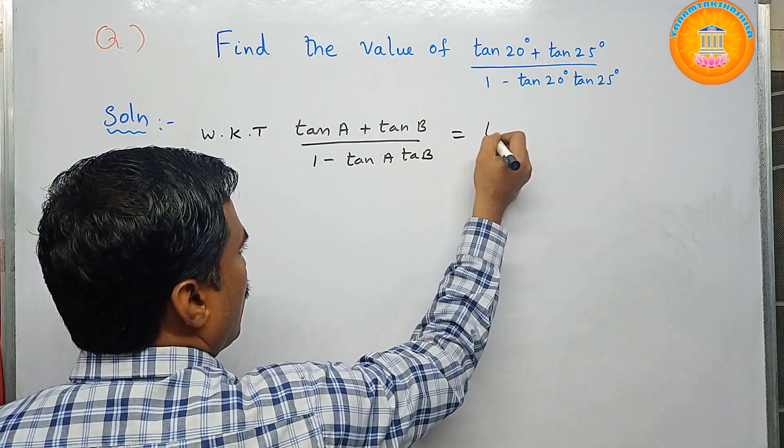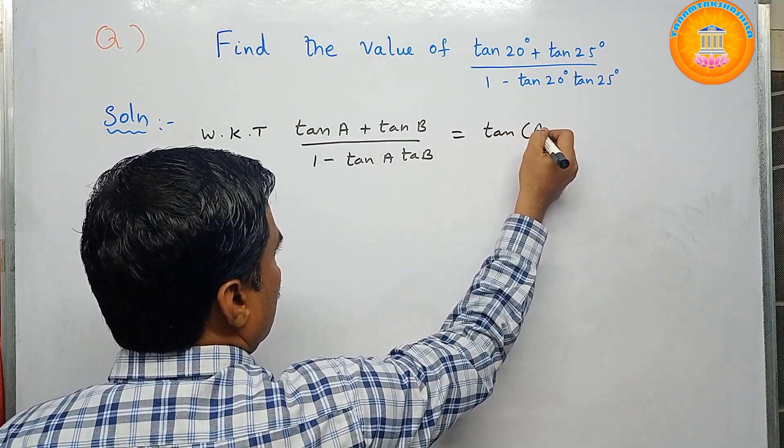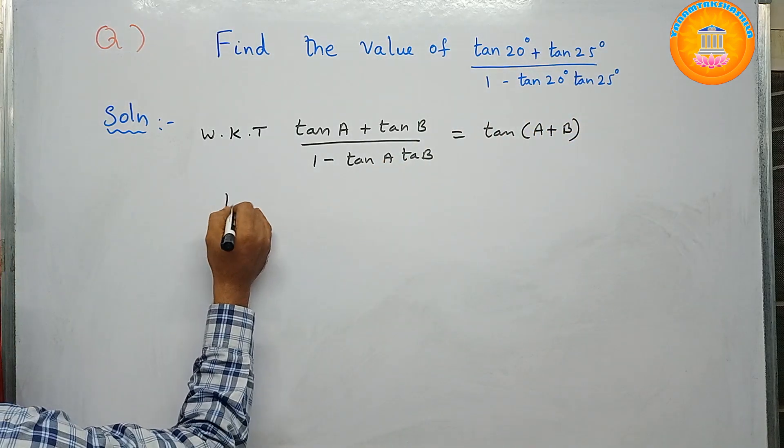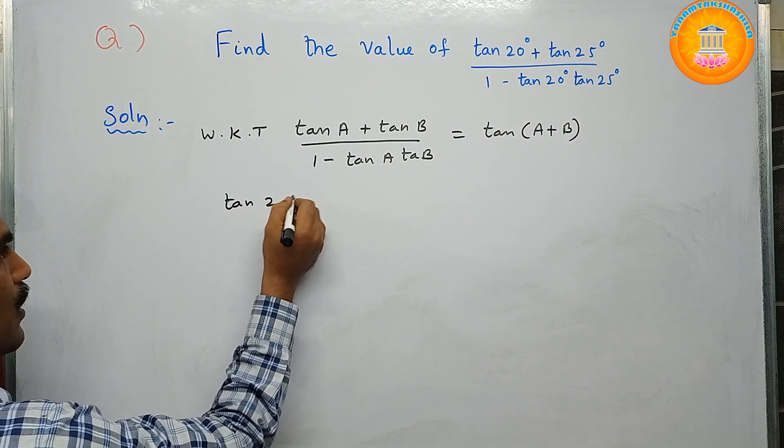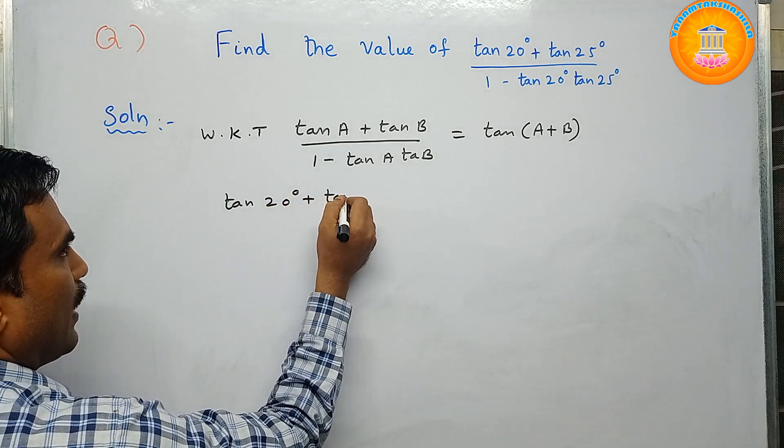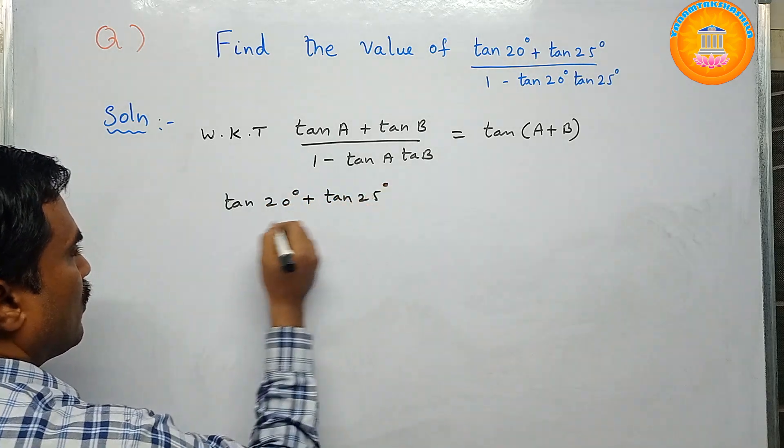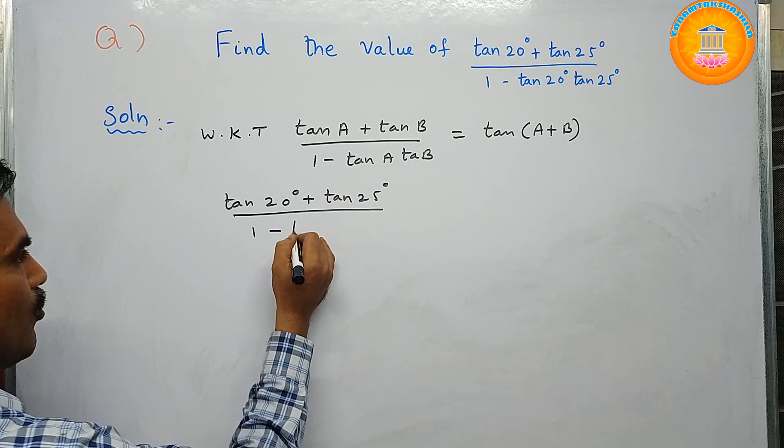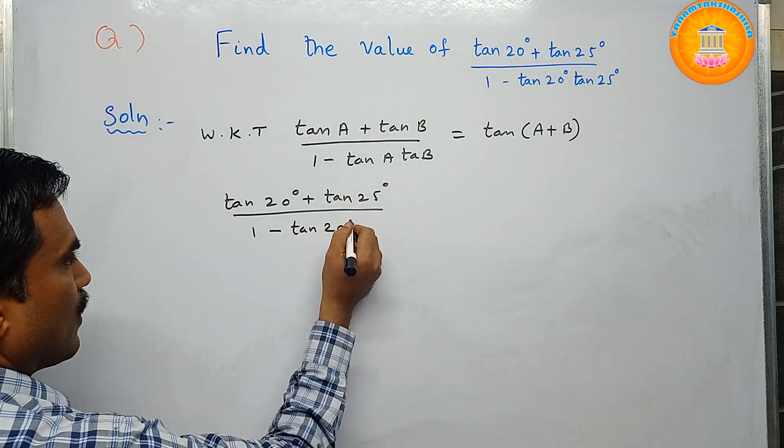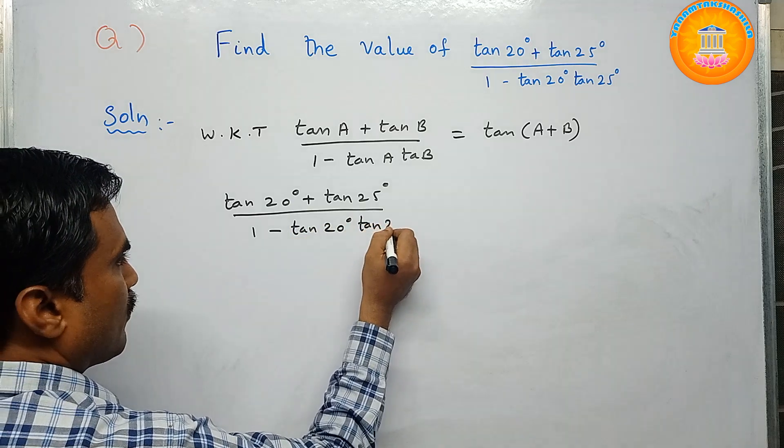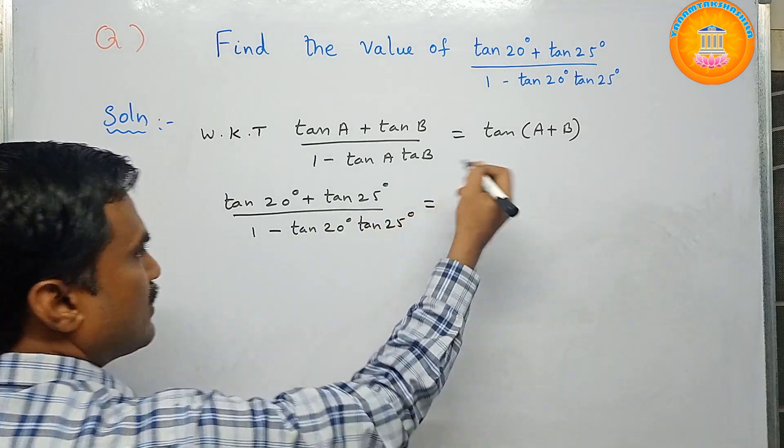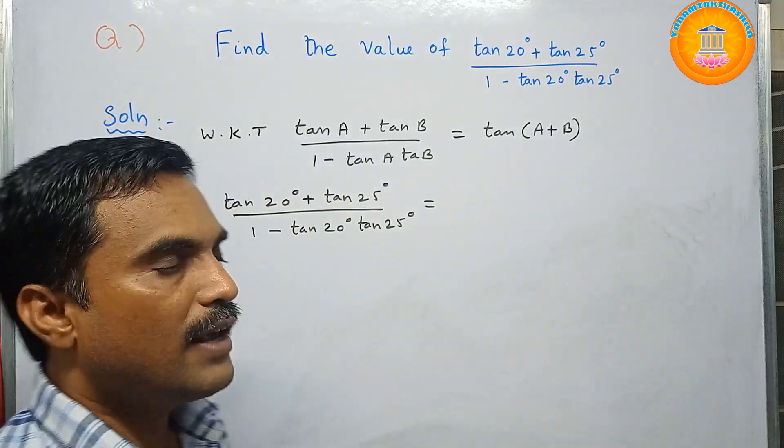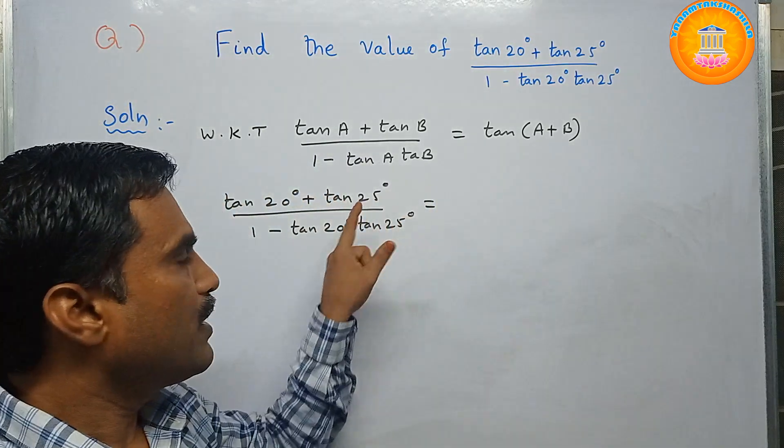Now write the given problem here: that is tan 20° plus tan 25° divided by 1 minus tan 20° tan 25°. This can be written as tan of A plus B, so here angle A is 20 degrees and angle B is 25.